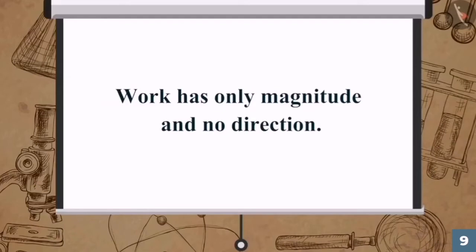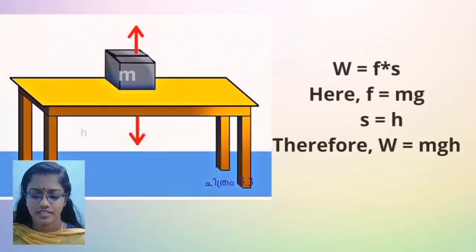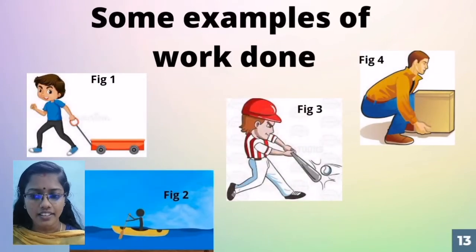Work has only magnitude and no direction. The SI unit of work is Newton meter, which is called Joule. If the work is done against the gravitational force, then it is given by MGH. Here are some examples of work done.